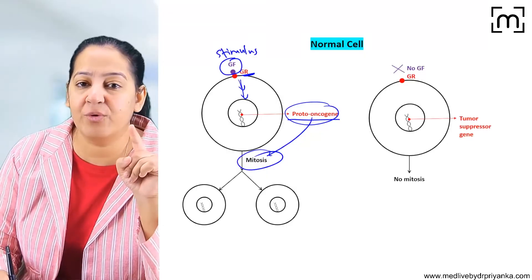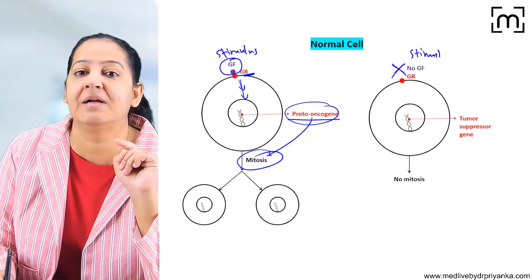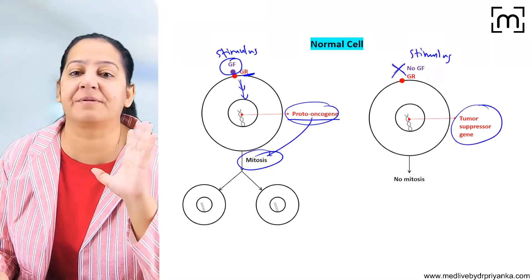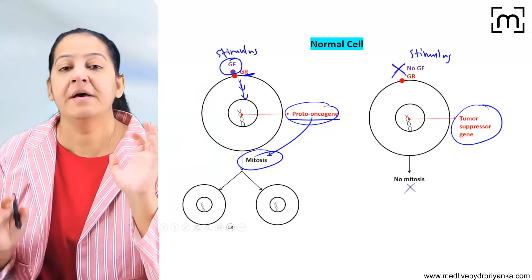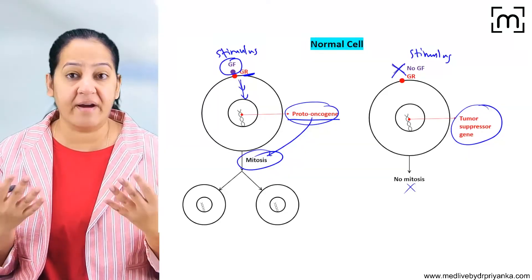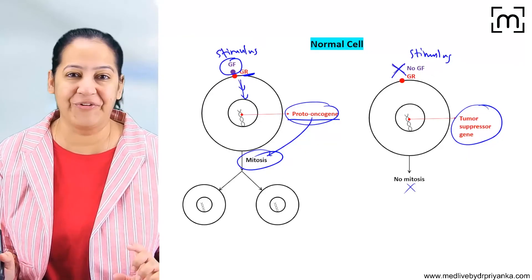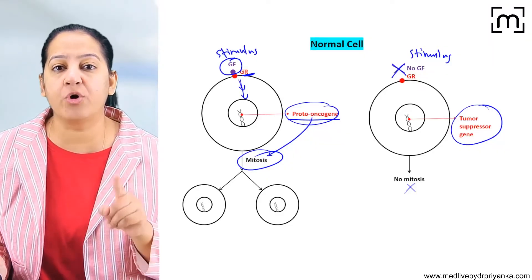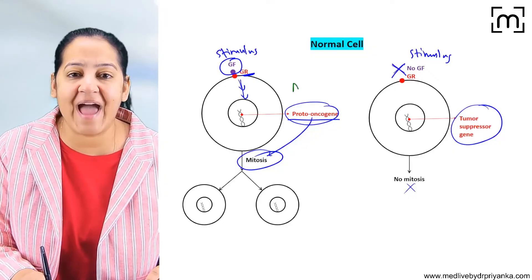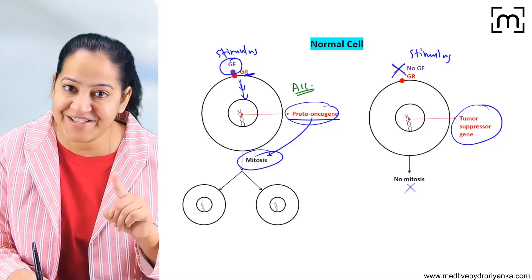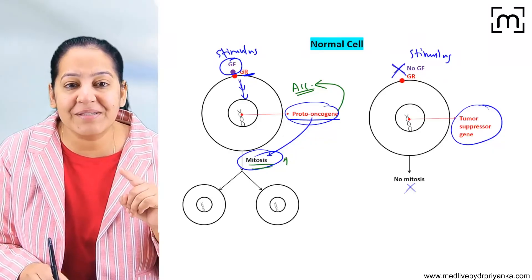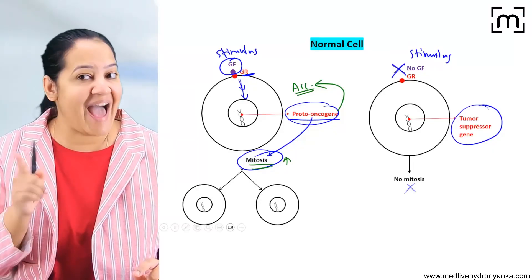When the growth factor is absent — the stimulus is absent — another gene gets stimulated. The name of that gene is tumor suppressor gene, and that tumor suppressor gene inhibits mitosis. To understand this, think of driving a car: when we apply the accelerator, the speed of the car increases. So can we say proto-oncogene is the accelerator? Because it increases the rate of mitosis and cell division — it is like the accelerator of the car.